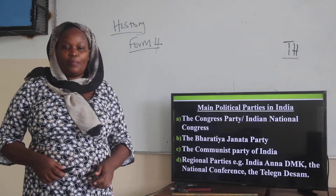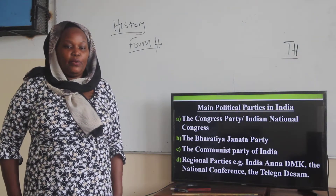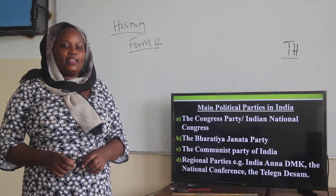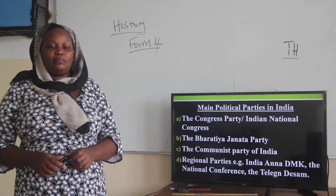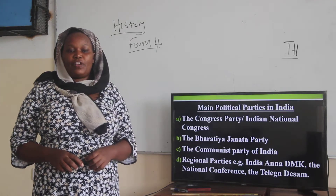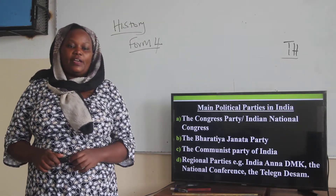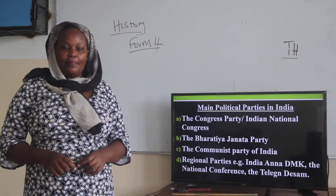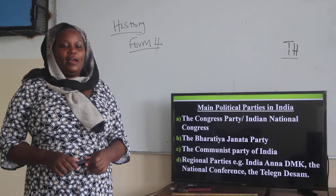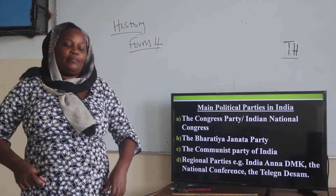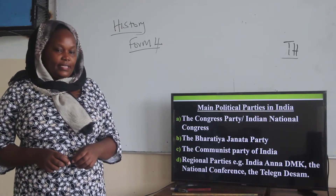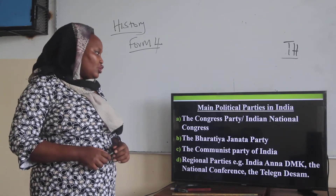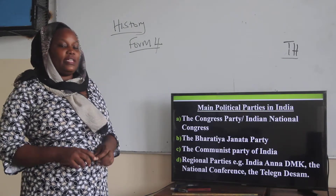There are many political parties in India, and the main ones number four. One is the Indian National Congress — the party associated with Mahatma Gandhi. Then there is the Bharatiya Janata Party, which is also one of the major parties. Then the Communist Party of India. And there are also small regional parties such as the Anna DMK, the National Conference, and the Telegram Sun. Those are some of the political parties found in India.